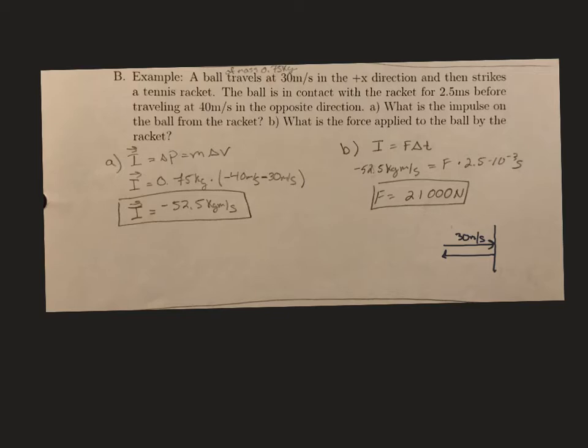We need to make use of our impulse-momentum theorem, because first we need to solve for impulse. Since we have our two velocities — 30 meters per second initially and 40 meters per second finally — and we have the mass of the ball, we can use the portion of the impulse-momentum theorem that says impulse equals the change of momentum, or the same thing as mass times the change of velocity.